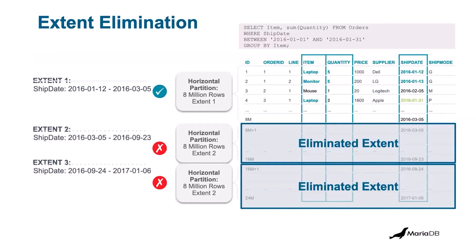Here's how basic extent elimination works. You run a query with a filter — in this case, a date range. Because that column, shift date, uses a date field, we've already partitioned it in extents. We partition it horizontally in terms of columns and also vertically in terms of extents. Based on your filter, we know exactly which file and which extent that data is located in, so we go directly there. We don't have to traverse the entire file system, eliminating extents we don't need to touch. Each column is its own file, and each extent is its own file, so we narrow down to just those separate files, pull the data back very quickly. The data is segregated into horizontal and vertical partitions.